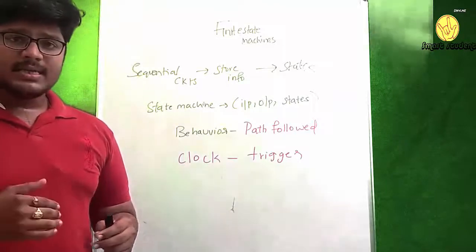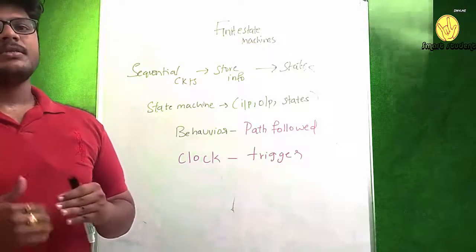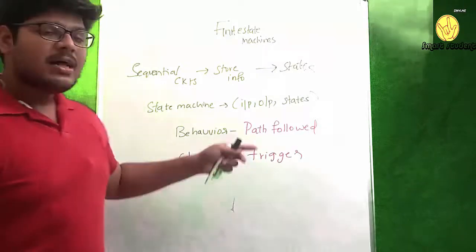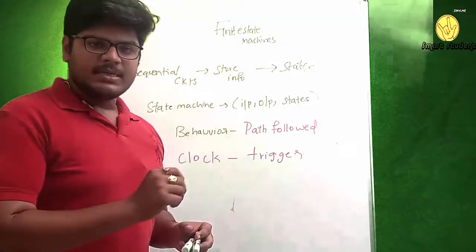How can you assess that this state diagram is going to perform this kind of information? The behavior of the state machine can be assessed by the path followed by the state diagram. Input to the state machine determines what the next state is going to be.